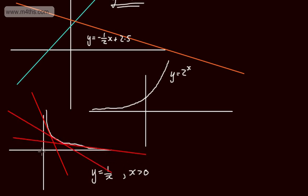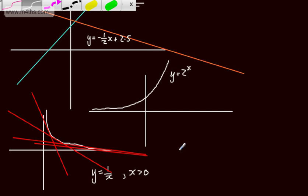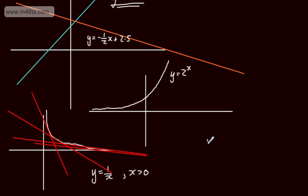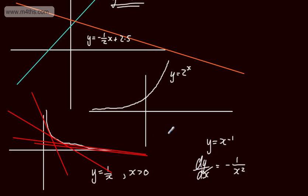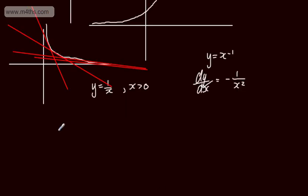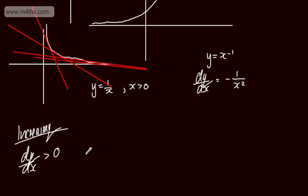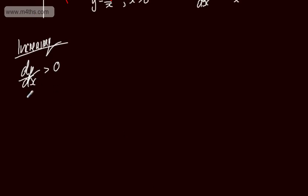How do we know that this is decreasing? Well, y equals 1 over x is the same as y equals x to the power of minus 1. If we take the derivative dy/dx — the gradient function — we multiply down by the power and drop the power by 1, giving us minus 1 over x squared. Clearly for all positive values of x, so all values greater than 0, we have a negative gradient. So for an increasing function, dy/dx — or f'(x) — will always be greater than 0 for all values of x in that interval, meaning this is an increasing function.